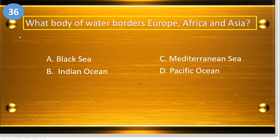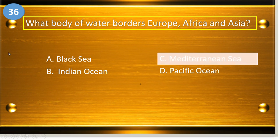Number thirty-six: what body of water borders Europe, Africa, and Asia? A, Black Sea; B, Indian Ocean; C, Mediterranean Sea; and D, Pacific Ocean. The answer is letter C, Mediterranean Sea.